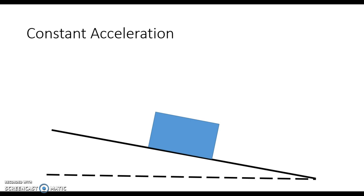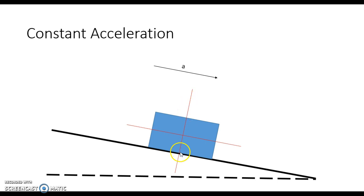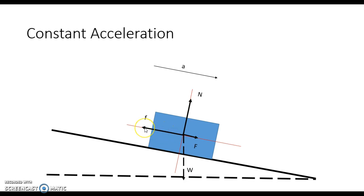Now we've moved from that case to an inclined plane. In this case we have an inclined plane with a box on it, and naturally if the frictional force is low, we're going to have an acceleration of the box going downward along the inclined plane. Similar to the last problem, we draw our axis along the box and then come up with our free body diagram showing the forces acting on the box.